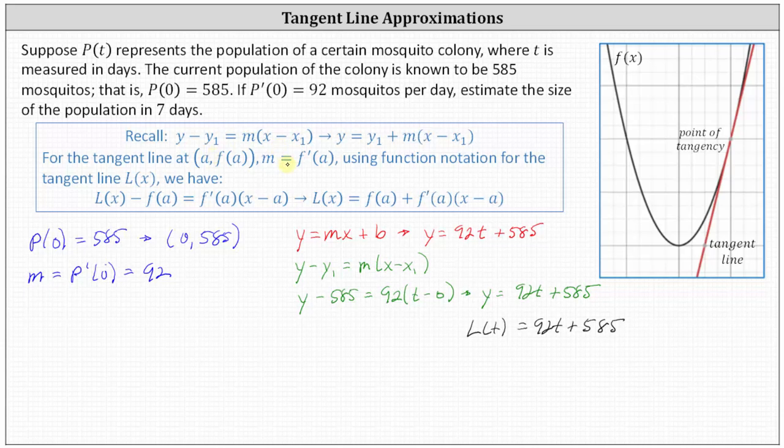Using this notation, notice y is just L of x, y1 is just f of a. m is replaced with f prime of a, the slope of the tangent line. And instead of x minus x1, we have x minus a. And if we solve this for L of x, we add f of a to both sides. And this form here shown on the right looks a lot different, but it is simply just point-slope form, solved for L of x, just like we see this form here above, solved for y.